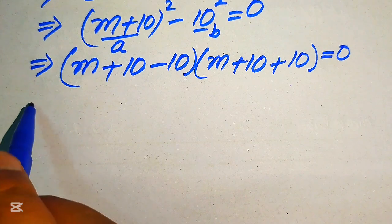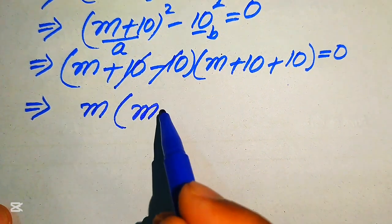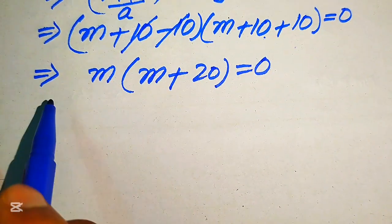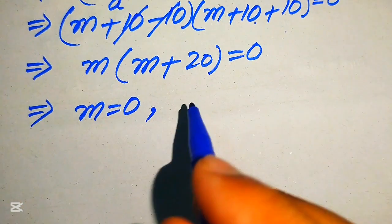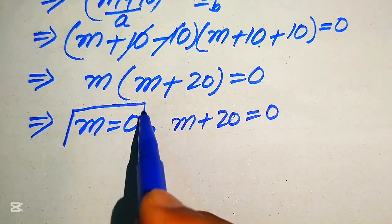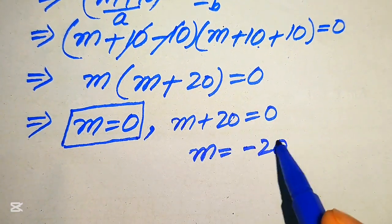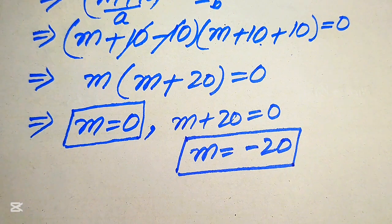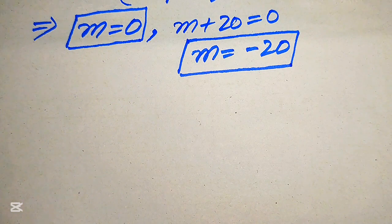Simplifying further, the +10 and -10 cancel, giving us m(m + 20) = 0. We divide this into two cases: the first case gives m = 0, and the second case gives m + 20 = 0, so m = -20. These are the two solution sets of the given equation from Method 1.